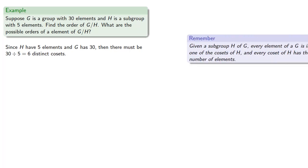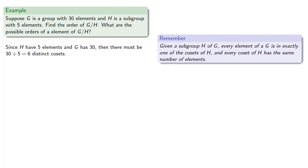Because, given a subgroup H of G, every element of G is in exactly one of the cosets of H and every coset of H has the same number of elements. So the quotient group G mod H has order 6, and an element AH of G mod H must have order 1, 2, 3, or 6 — one of the divisors of the order of the group.